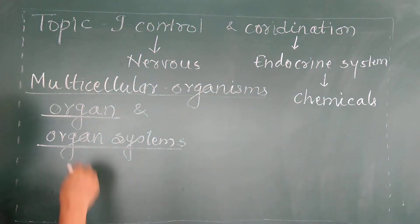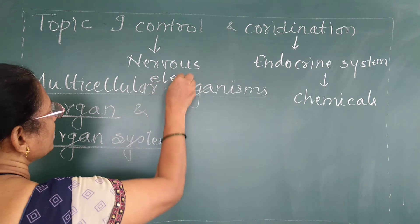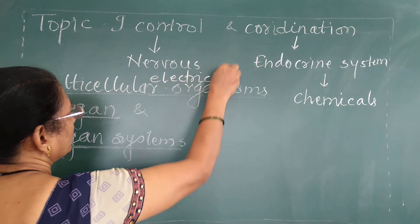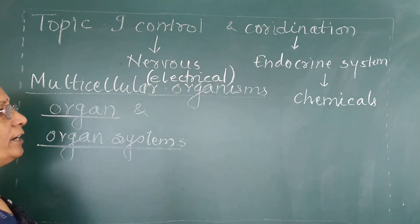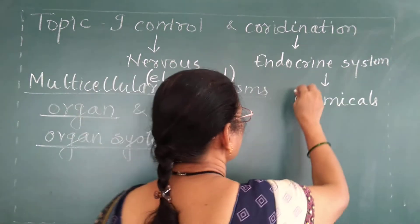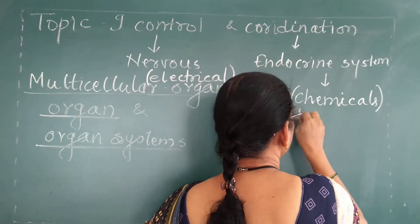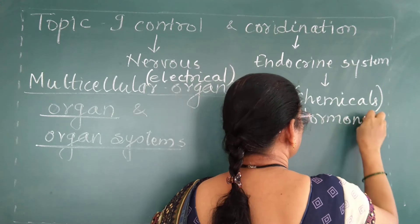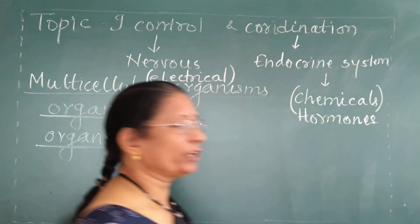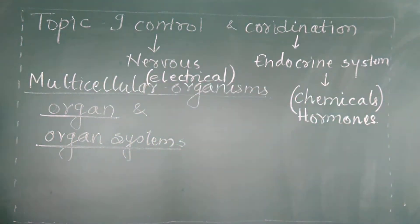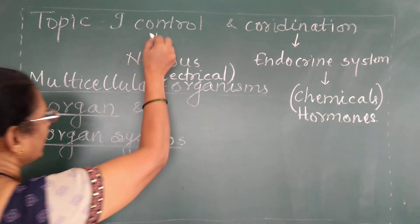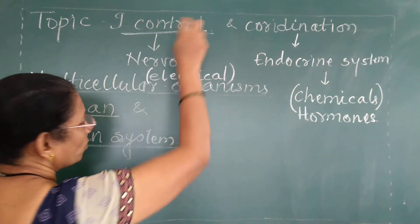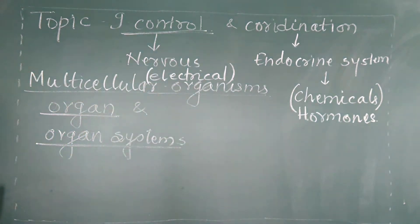The nervous system works due to electrical signals, and the endocrine system works due to production of chemicals also called hormones. Both systems work in coordination with each other. We have to study this control, and we are going to start with control first. This control is found in case of plants as well as in case of animals.